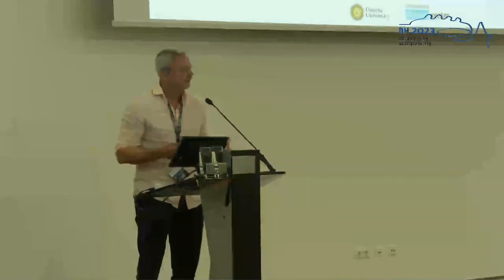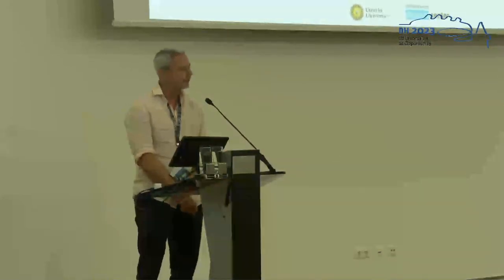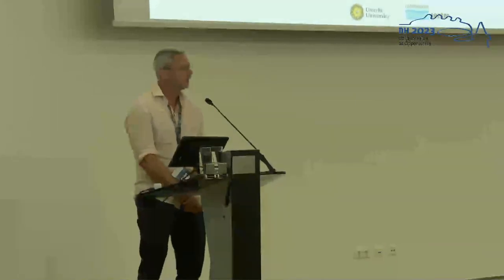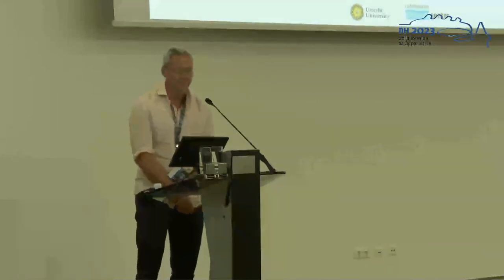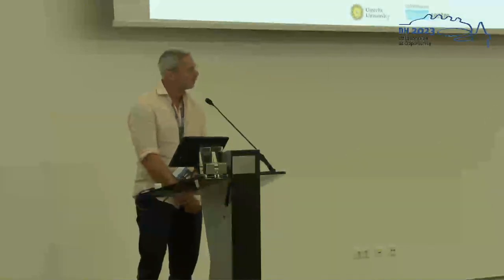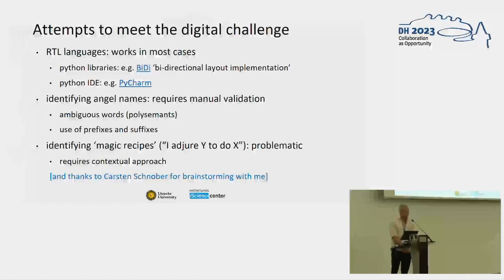The first step we're taking is to construct this database of angel names based on Hebrew texts. For Hebrew, you have to learn, as an amateur engineer, to work from right to left rather than left to right, which sometimes presents challenges. There are libraries that help you along, and most software can cope with this — Word can cope with it — but sometimes the cursor does very funny things and it's not always easy.